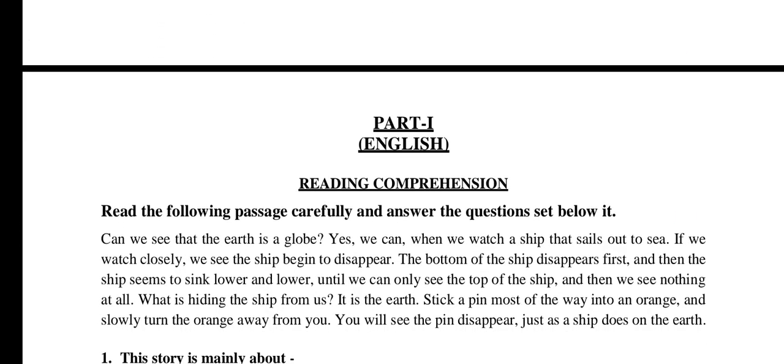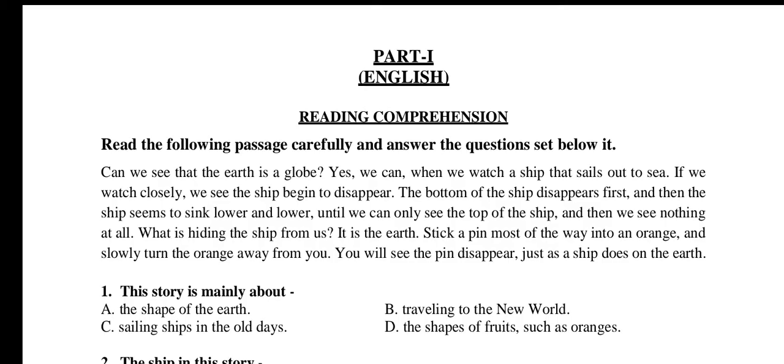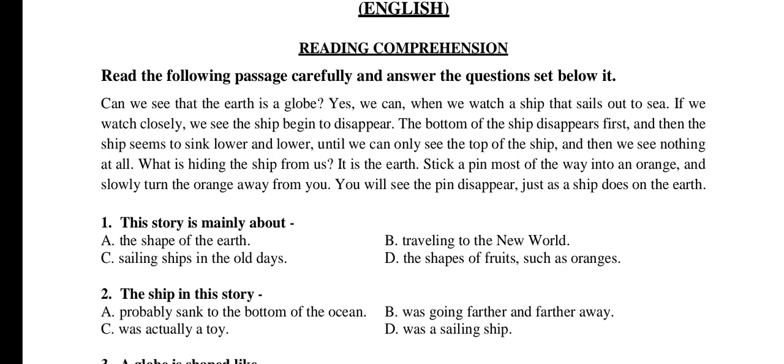Part one: English Reading Comprehension. Read the following passage carefully and answer the questions set below it. Can we see that the earth is a globe? Yes we can. When we watch a ship that sails out to sea, if we watch closely, we see the ship begin to disappear. The bottom of the ship disappears first, and then the ship seems to sink lower and lower until we can see only the top of the ship. What is hiding the ship from us? It is the earth. Stick a pin most of the way into an orange and slowly turn the orange away from you — you will see the pin disappear.